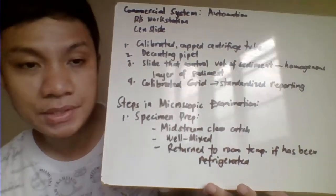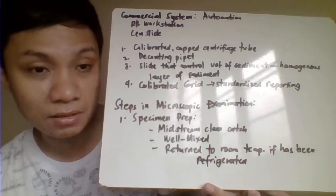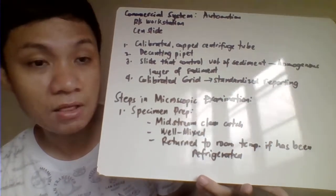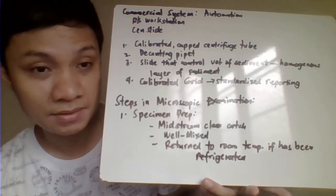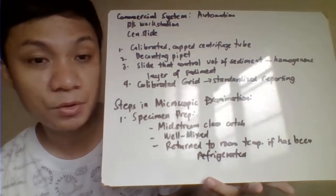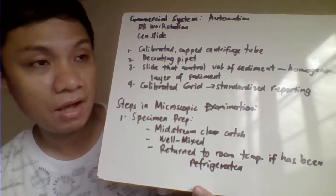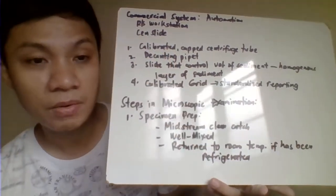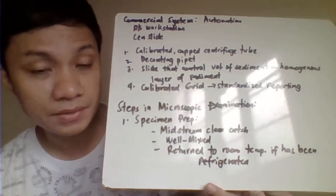We also have the commercial system — these are actually automated instruments. When automated, they tend to automate all the steps in your specimen preparation up to your microscopic identification. Examples of commercial systems include your RS workstation, your SENS light, and many others. These automated instruments have features such as calibrated centrifuge tube caps, which standardize the volume of specimen used during sediment preparation.